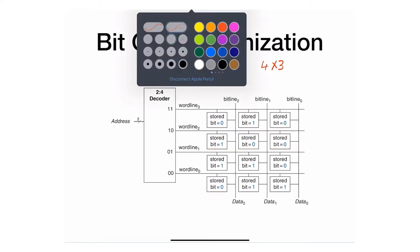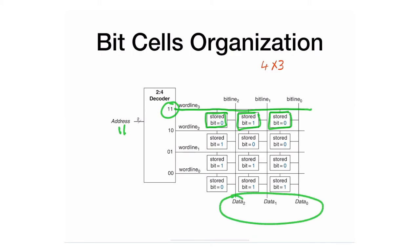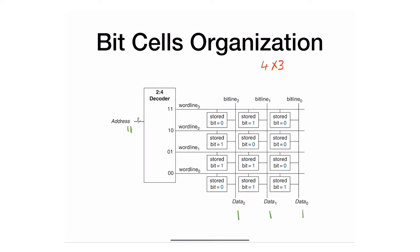Similarly, for a write into a particular location — say, overwriting with 111 — you put address 11 on the decoder, which activates that word line, connecting those bit cells. But if you do it this way, it will technically read whatever is on the data port, which is why you should put the data you want to write first — in this case, 1, 1, 1 — and then put the address 11, which activates the word line and connects it, allowing you to overwrite that particular row.